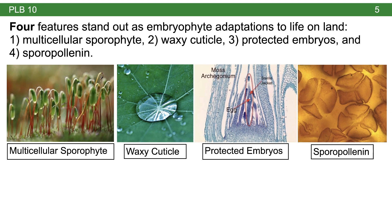Remember that in order to transition to life on land, plants had to solve several problems — including how to support themselves, how to effectively reproduce, and how to prevent desiccation. Four features really stand out as land plant adaptations: the multicellular sporophyte, a waxy cuticle, protected embryos, and sporopollenin.